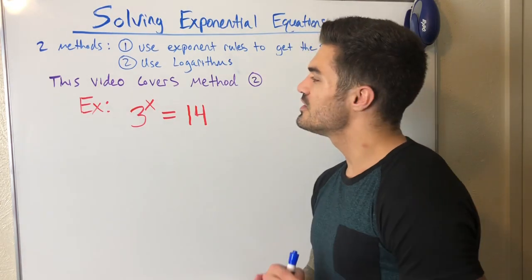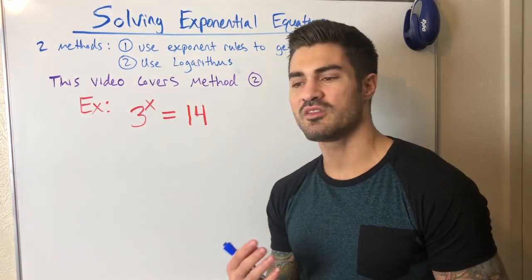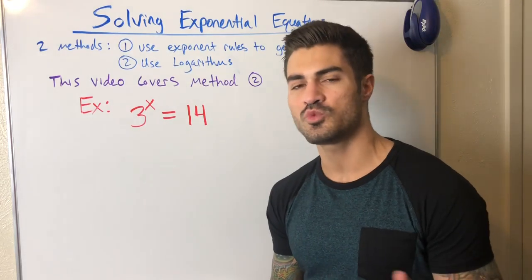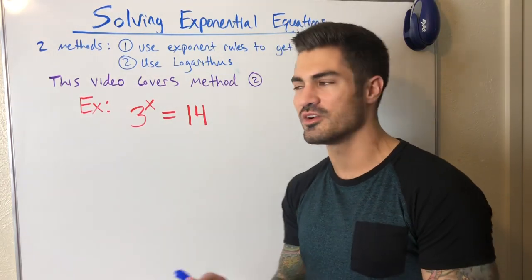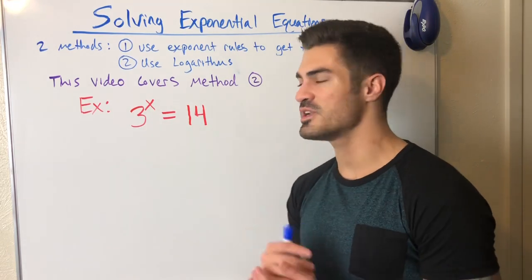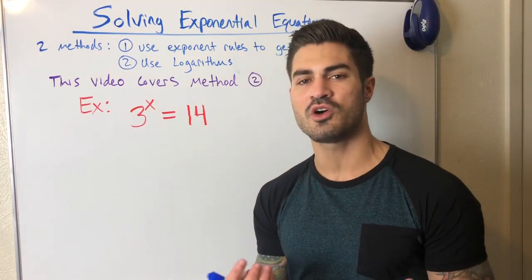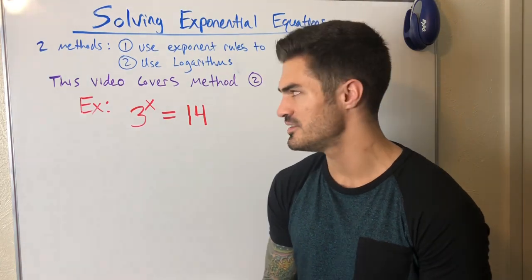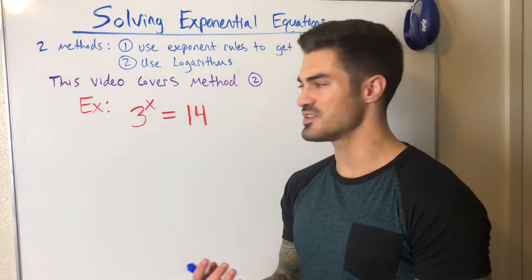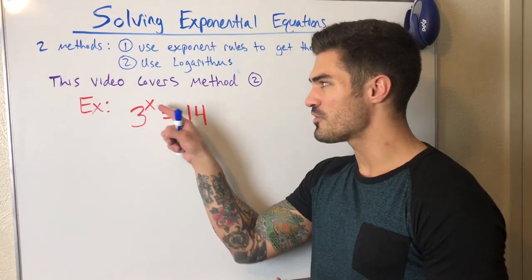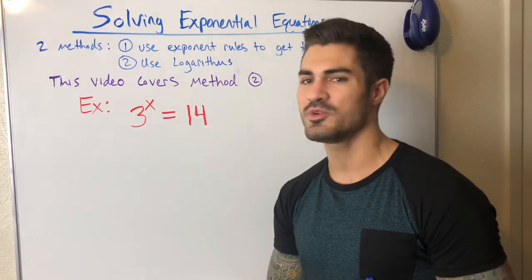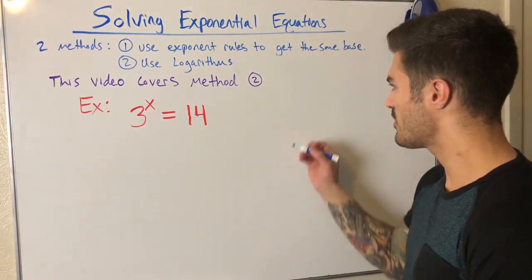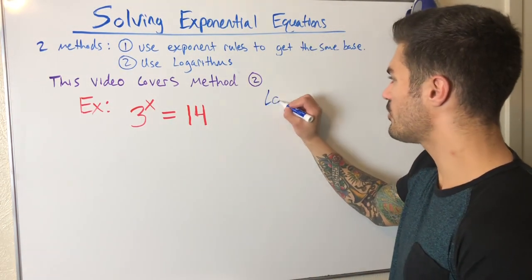So we have to use our second method: logarithms. We use logarithms because they are inverses of exponentials — we use one to undo the other. In general, when you have exponential equations you'll use logs to solve, and when you have log equations you use exponentials. Another reason is we need to get X out of the exponent so we can solve.